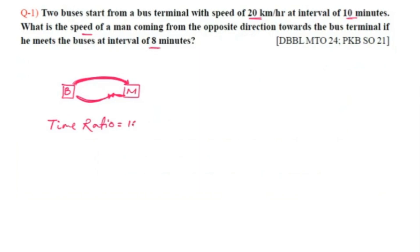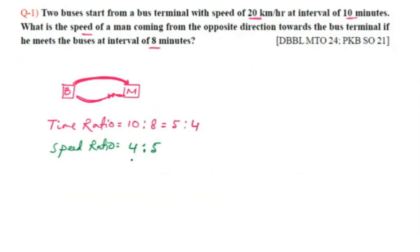The time ratio is 10 minutes to 8 minutes, which simplifies to 5 is to 4. Since the distance is constant but the time is less, the speed ratio is inversely 4 is to 5. So the speed ratio gives us 4 units for the bus and 5 units for the combined speed.